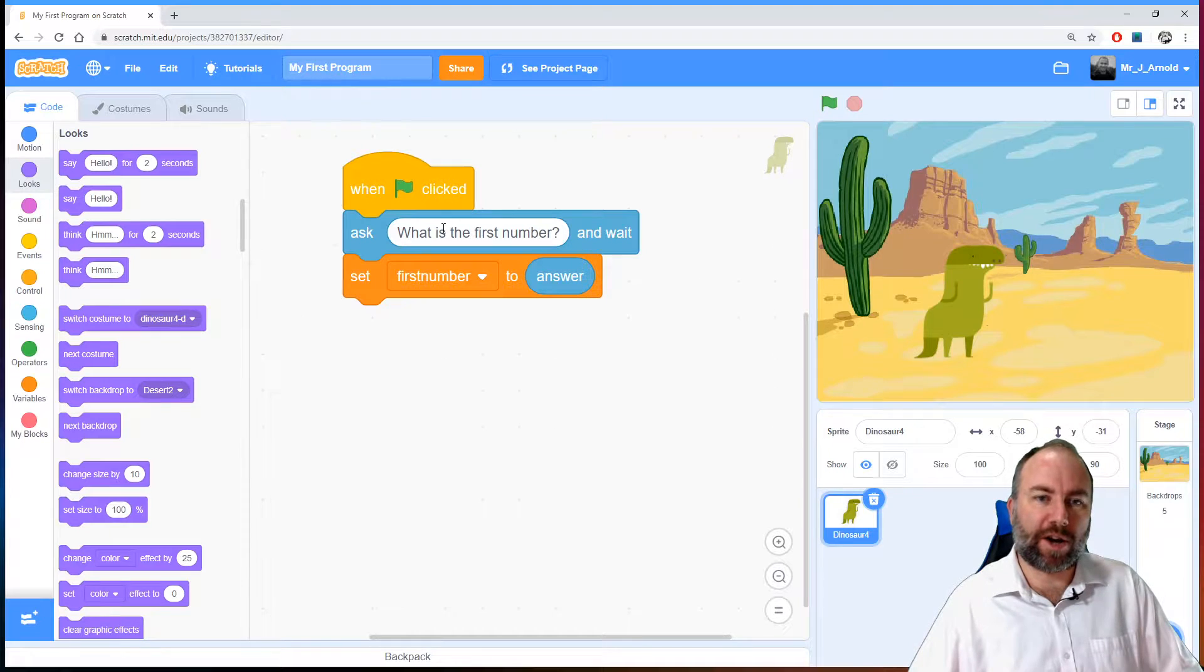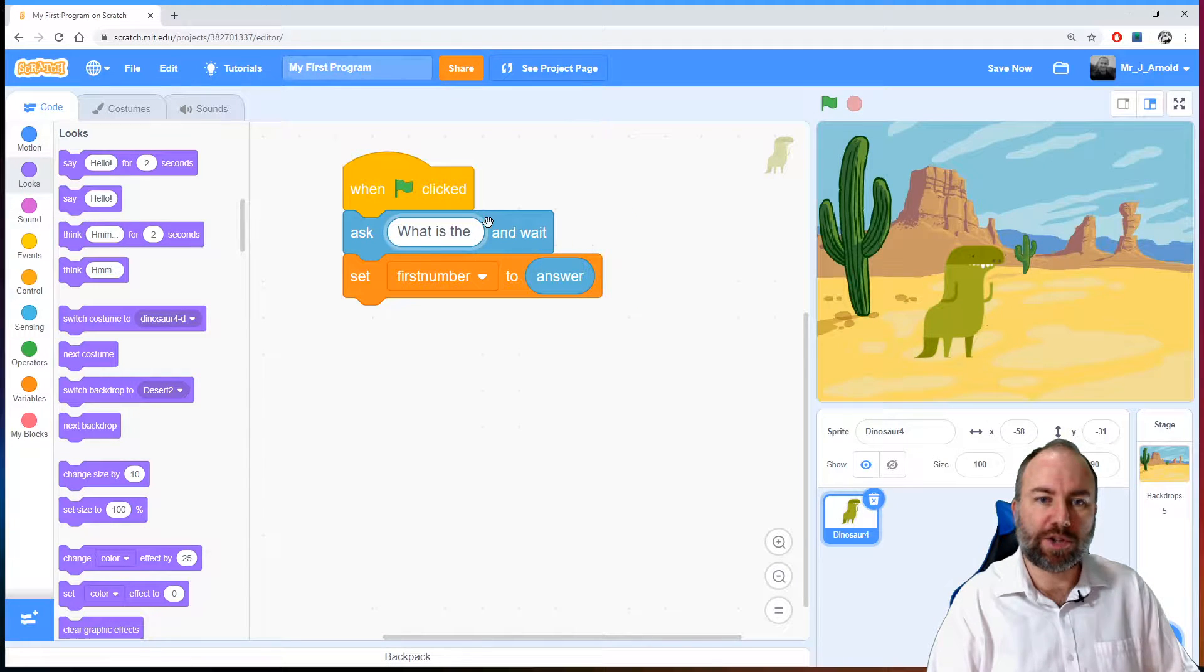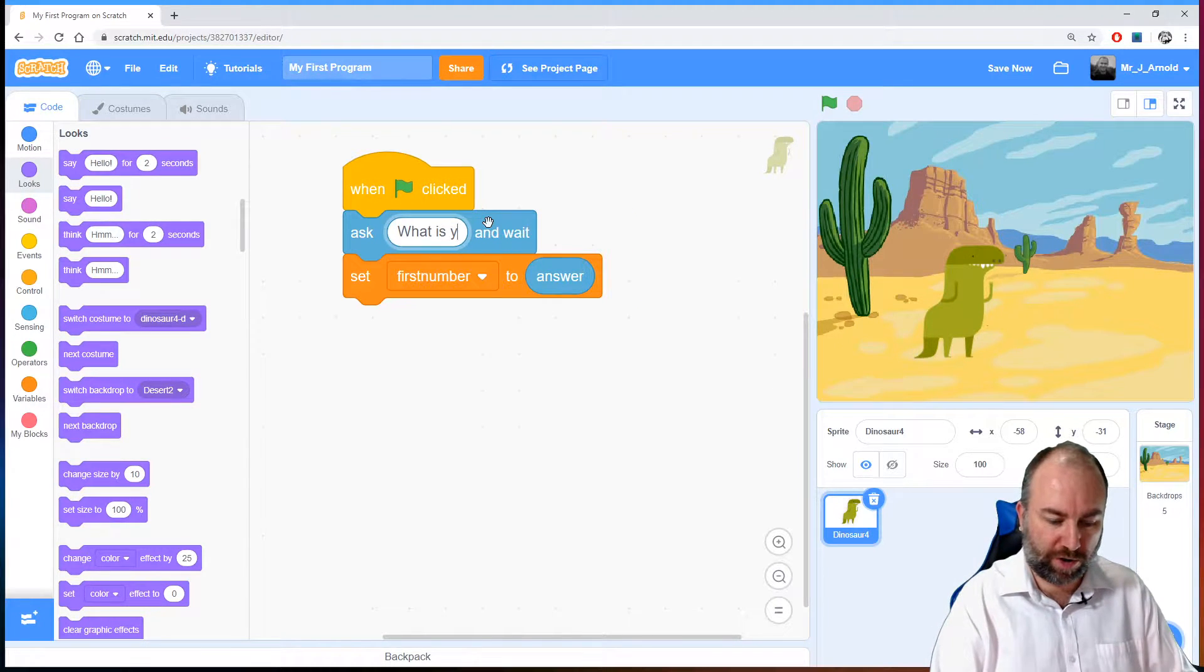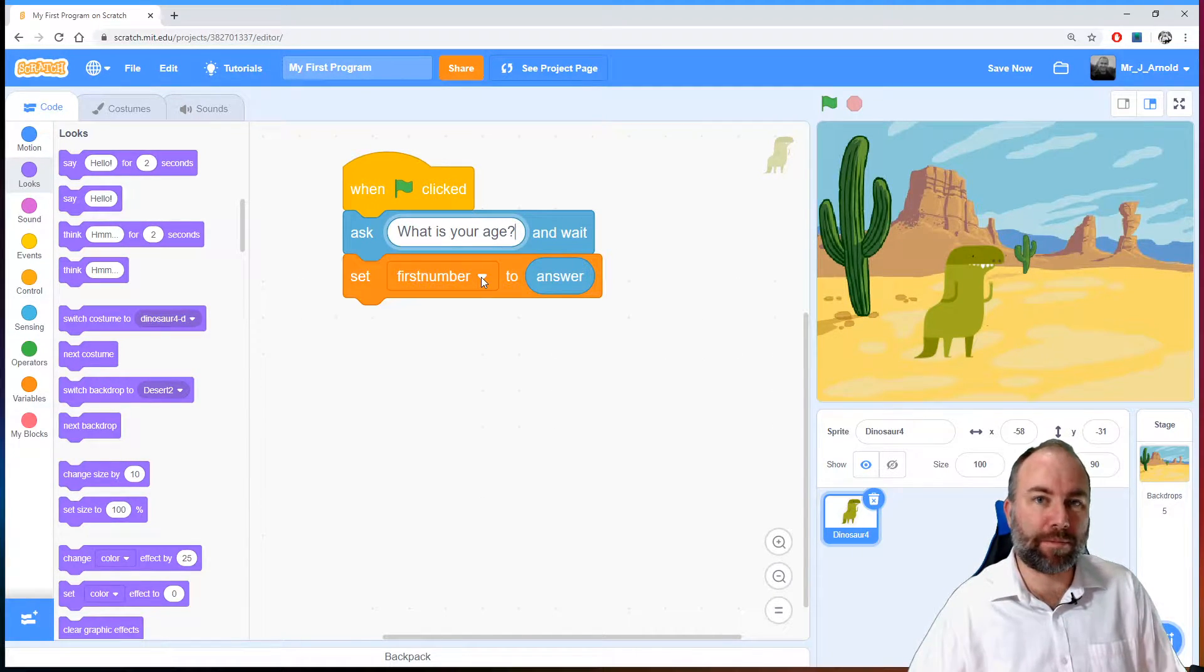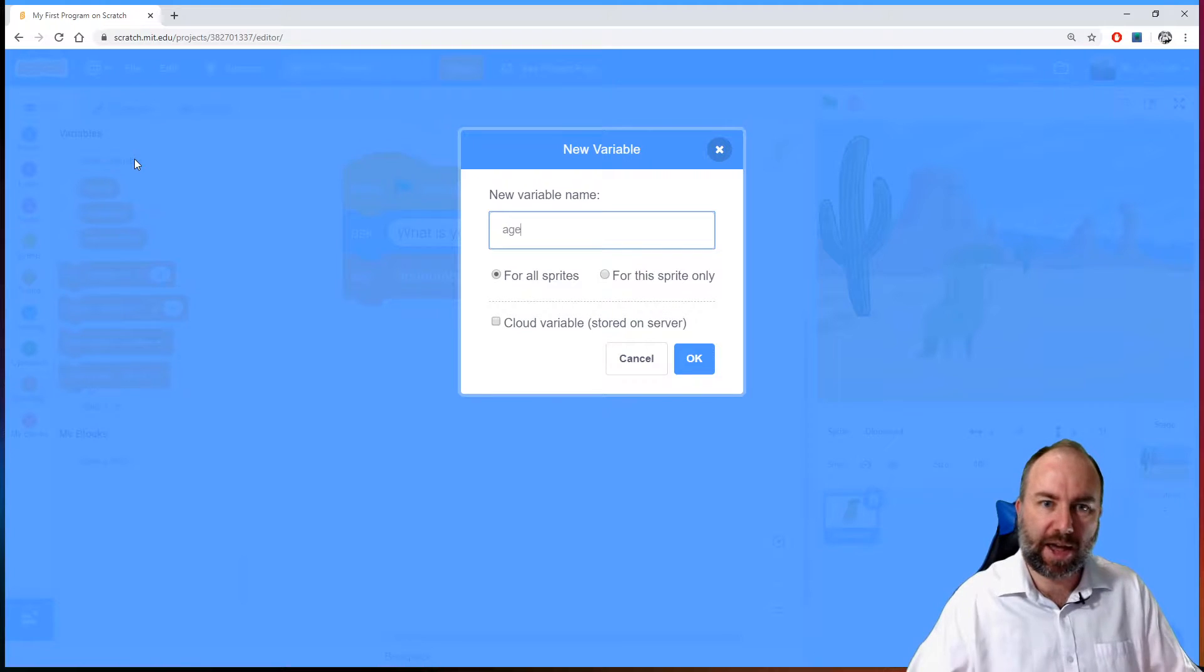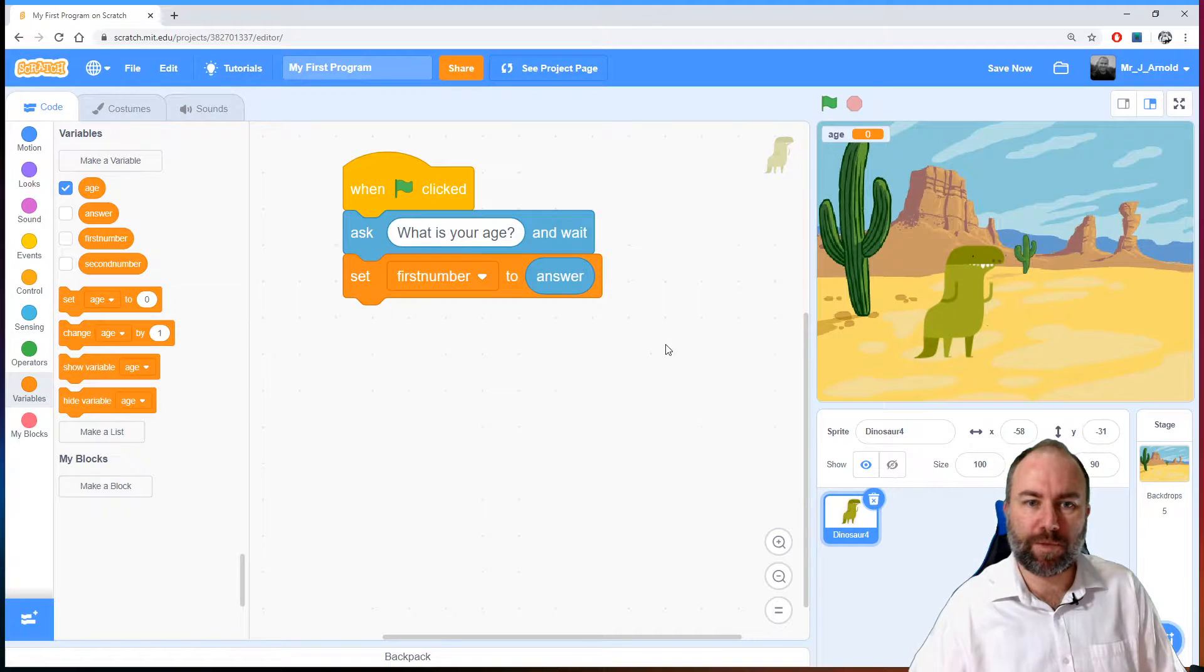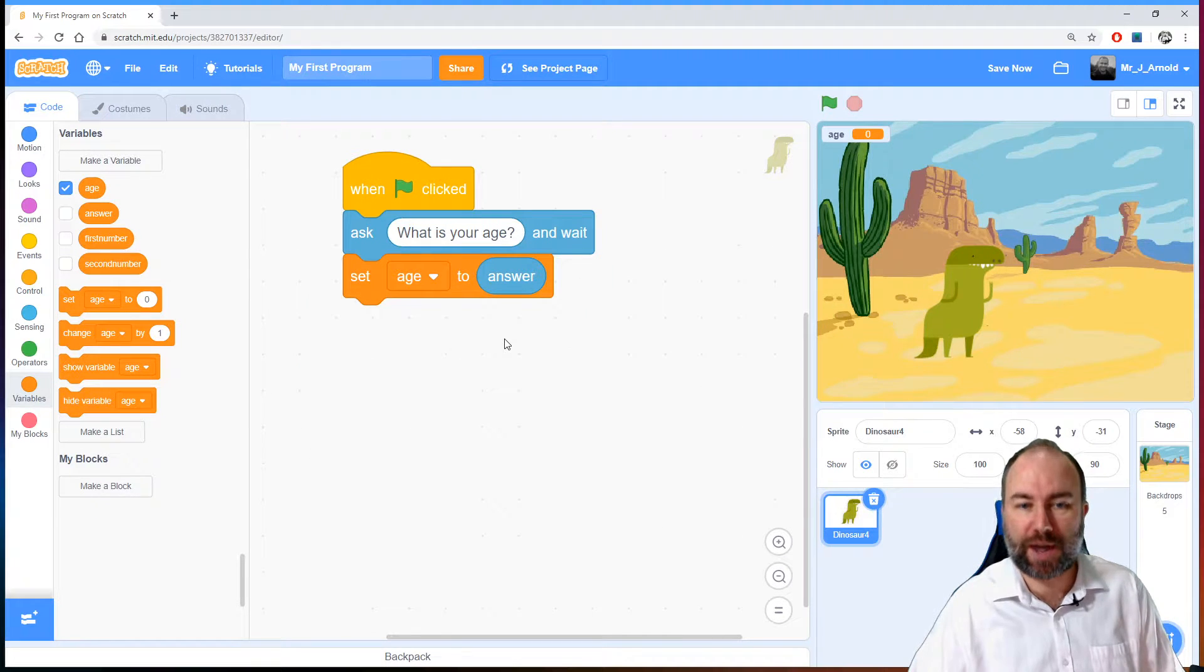So the question we're going to ask is what is your age? Let's just change the text inside here then. So what is your age? And wait. And then we can store that answer in first number. Well that variable doesn't make a lot of sense. Let's make a new variable and we'll call this age. There we go. So we'll store whatever answer they give us in the variable called age.